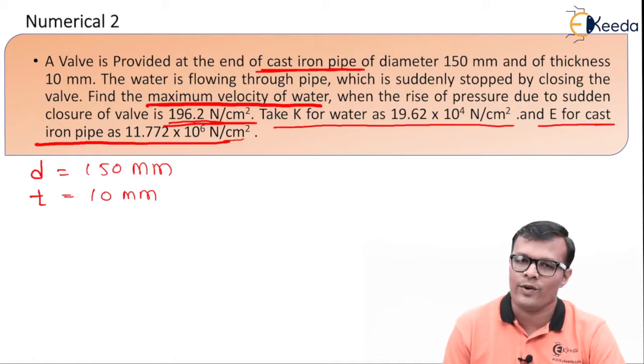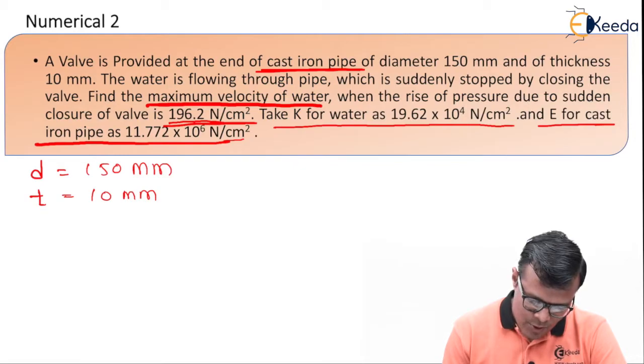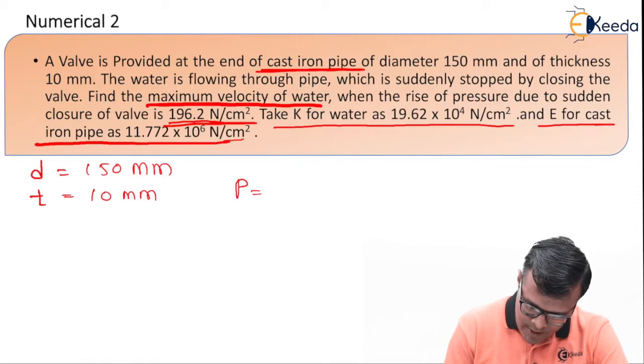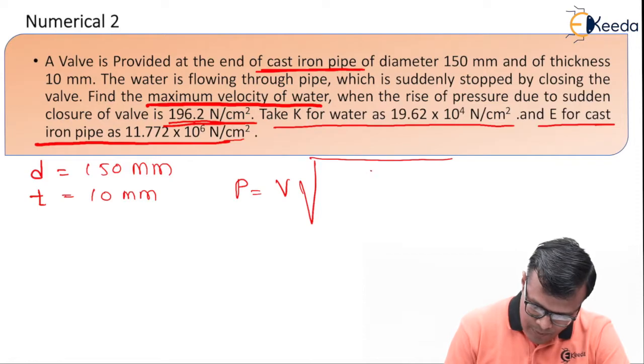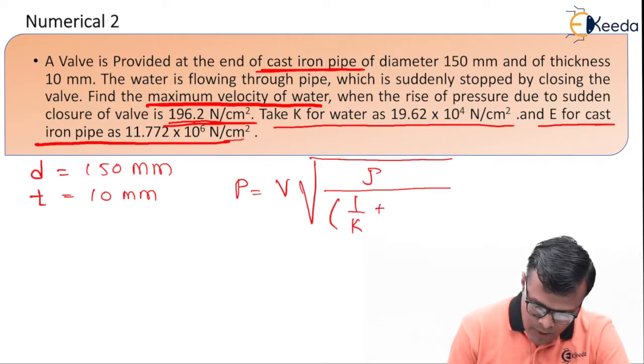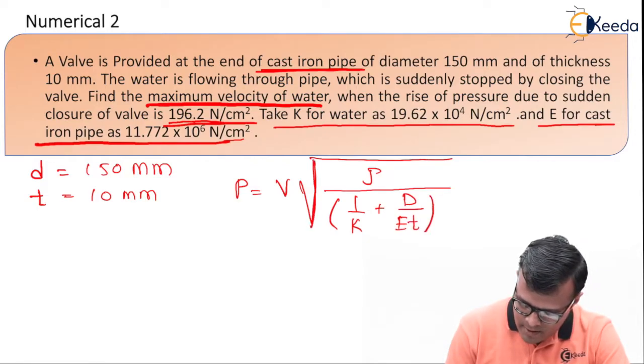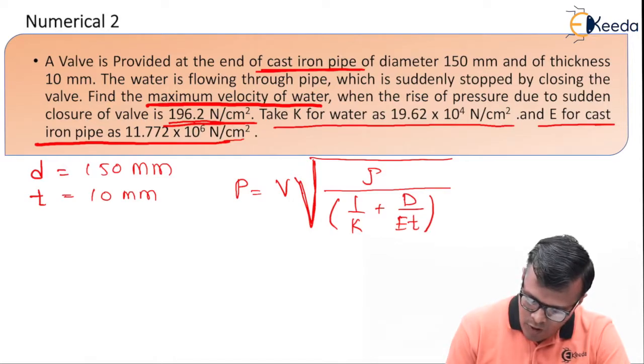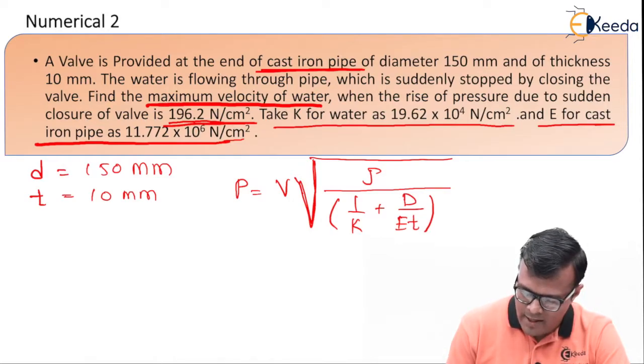So it is better that we will use the same units and we will use the same formula for the calculations. So it is clear that we have to use formula as P = V√(ρ/(1/K + D/ET)) bracket complete. Remember this square root sign is for numerator as well as denominator.